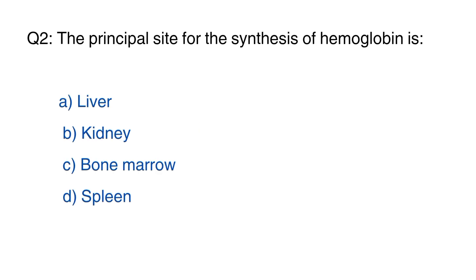Question number 2. The principal site for the synthesis of hemoglobin is? The right option is C, bone marrow.